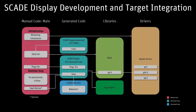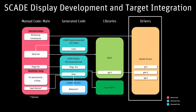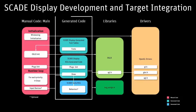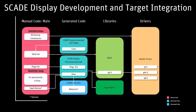This figure illustrates the main phases in the development and integration of a SCADE Display application on a target platform. On the right-hand side, you have the OpenGL drivers and the OGLX environment. In the blue boxes, you see the code automatically generated by SCADE Display KCG. This code is called by functions that you need to implement yourself to integrate within the architecture.